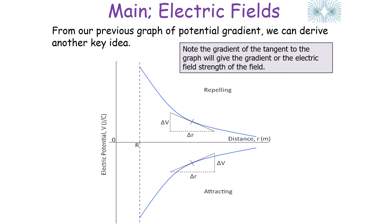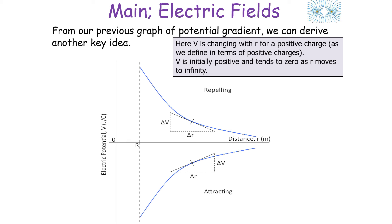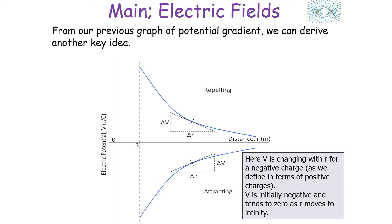From our previous idea of potential gradient, we can derive another key idea. Note that when we have V against R for a radial field, you get a curved line, so to work out the gradient of that curved line you have to take a tangent to find that gradient, or electrical field strength. If it's repulsion, V changes with R for a positive charge — we always define the field as being produced by a positive charge. If another positive charge enters the field, you get repulsion, so V is initially positive and tends to 0 as R moves towards infinity. For a negative charge placed into the field there is attraction, so V is initially negative and tends to 0 as R moves to infinity.